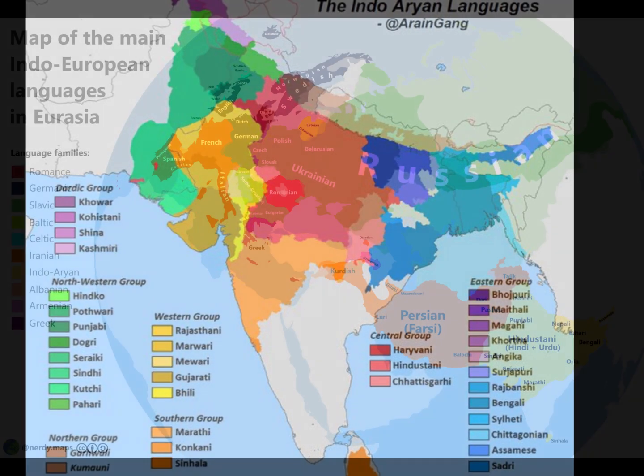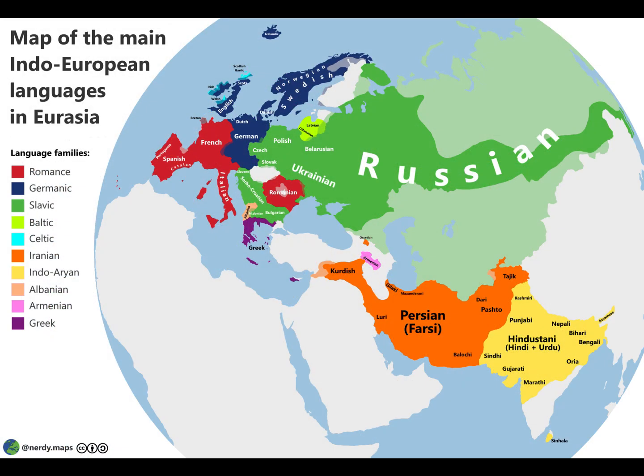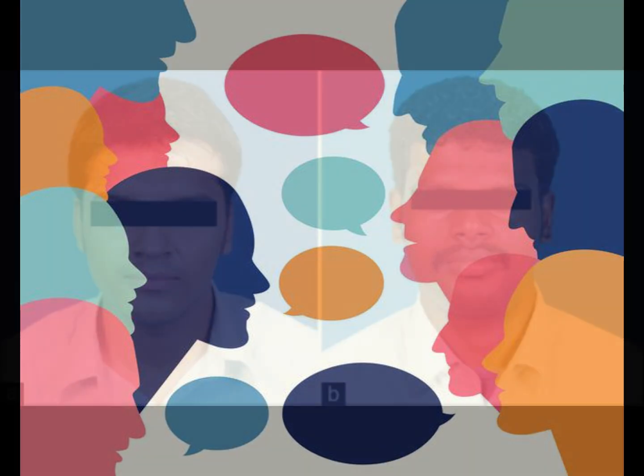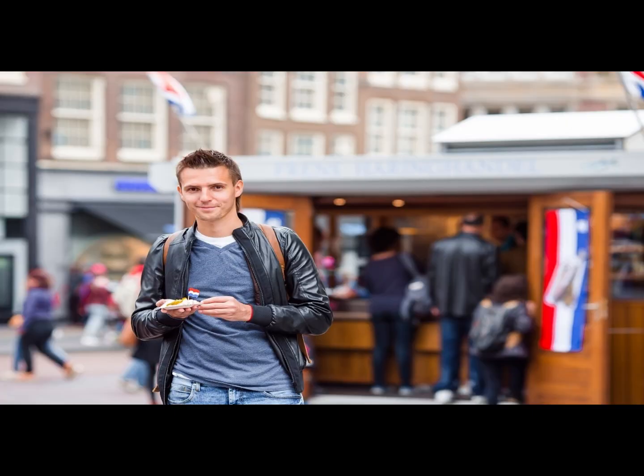This means that Punjabi, Bhojpuri, or Marathi are more closely related to English, Swedish, Italian, or Farsi than they are to Tamil or Malayalam. However, this is a linguistic relationship and not really a genetic one. An Indo-Aryan speaker is much more closely related to a Dravidian speaker than they ever will be with a Germanic speaker.